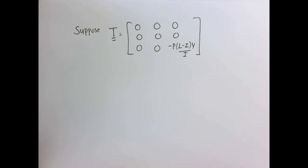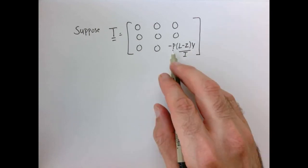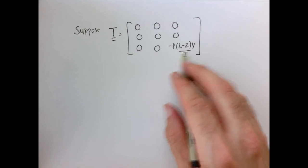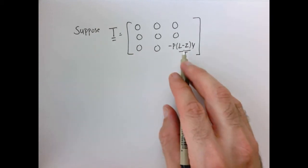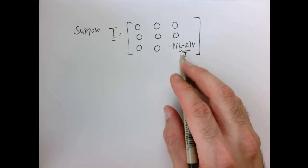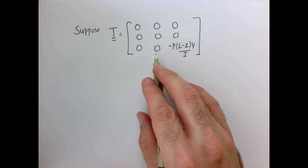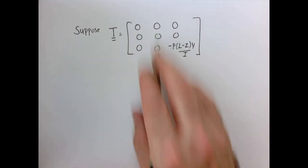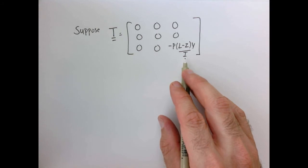If we assume the same stress distribution as pure bending, the normal stress is σ = −P(l − z)·y / I, where I is the moment of inertia of the cross-sectional area. Let's assume the stress tensor for the cantilever beam is exactly like a beam in pure bending — only normal stresses due to the bending moment. For this to be a valid stress tensor, it must satisfy equilibrium. Since the first two columns and rows are zero, we only need to consider the z-direction equilibrium equation.